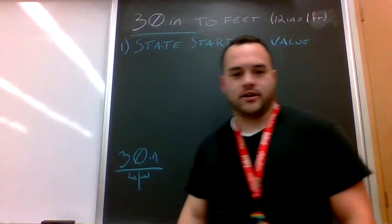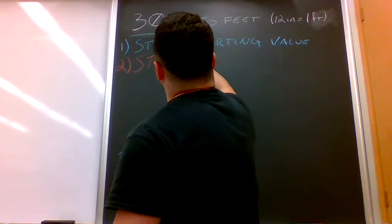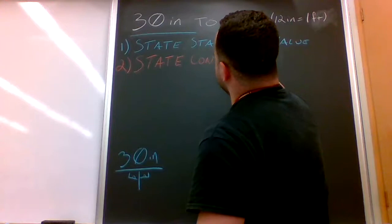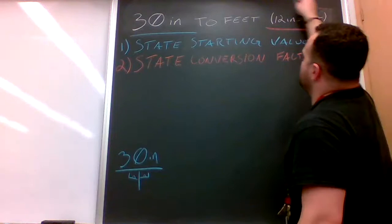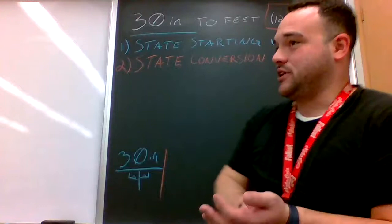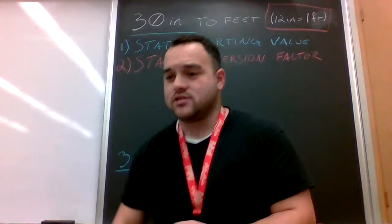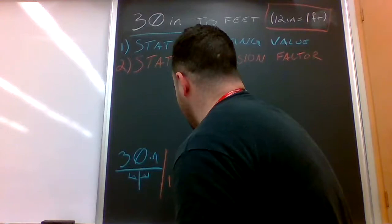Step two is to state our conversion factor, and that will be this right here: 12 inches is one foot. Now, whatever we want to get rid of, whatever we are coming out of, is going to go on the bottom. My example today was taking my bad report cards and stuffing them from the bottom of my book bag so that my mom and dad wouldn't see when I got home. So we're going to take the inches, 12 inches, put that on the bottom and put one foot on top.